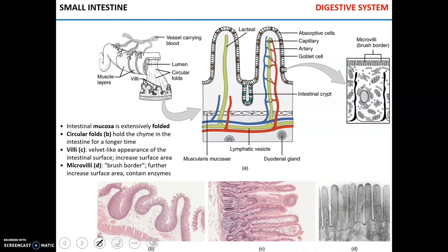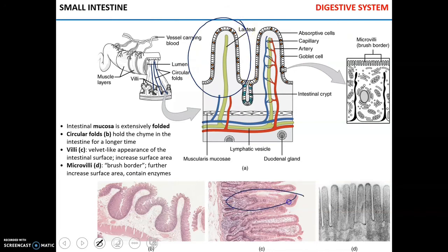Since the small intestine's main function is absorption, its surface is extensively folded. There are three main structures responsible for increased surface area: circular folds, which hold chyme in the intestine for an extended period; villi, which give the intestinal surface a velvet-like appearance and significantly increase surface area; and microvilli, which form the so-called brush border, increasing surface area even further. The brush border also contains enzymes.